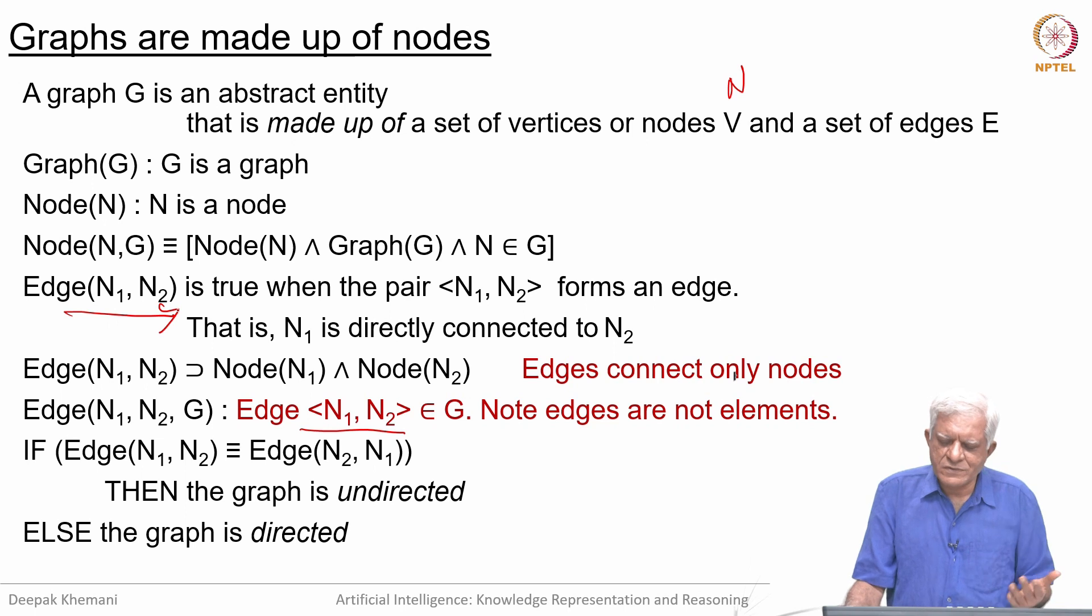If you want to allow it to be in both directions, you can say that the edge relation is symmetric in your graph. Otherwise, if only some edges are symmetric, then you have to explicitly state both N1, N2 and N2, N1. You cannot have a generic relation that all edges are symmetric.